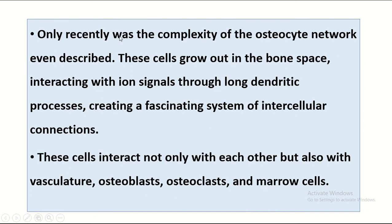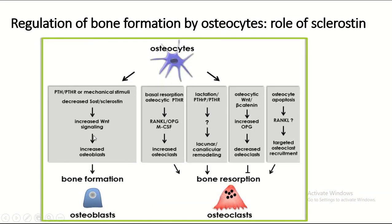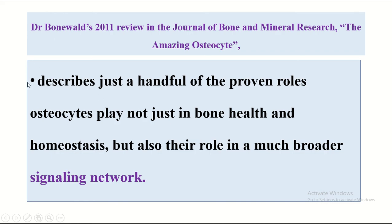Only recently was the complexity of the osteocyte network described. These cells grow out in the bone space, interacting via ion signals through long dendritic processes, creating a fascinating system of intercellular connections. Osteocytes interact not only with each other but also with other cells. Osteocytes can stimulate and increase osteoblast formation, indirectly increasing bone formation by increasing the number of osteoblasts. Osteocytes also increase lacunar and canalicular remodeling, bone resorption, and regulate bone formation.